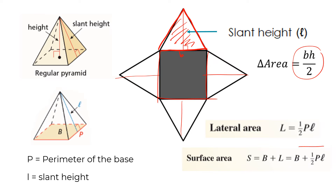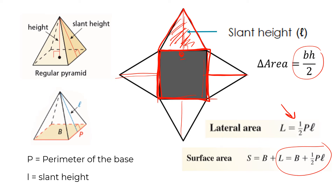The formula on screen shortcuts this a bit. The lateral area formula does things in a different order. Instead of finding one triangle's area — base times height divided by two — and then multiplying by four, we can use the perimeter of the base. Since all those triangles on the outside are the same, their base lengths are equal, and multiplying one base length by four gives the perimeter. So we take the perimeter, multiply by the slant height, and divide by two.